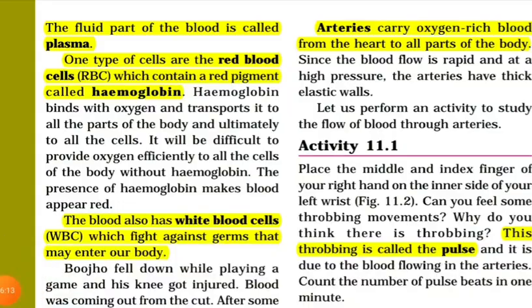Let us start with plasma. Plasma is the liquid part of the blood — a pale yellow colored, sticky liquid. It is 90% water and 3.5% common salt. Plasma contains dissolved substances such as digested food and waste products like carbon dioxide and urea. This plasma carries water and dissolved substances — digested food and waste products — from one part of the body to another. Red blood cells, white blood cells, and platelets are all immersed in this liquid called plasma.